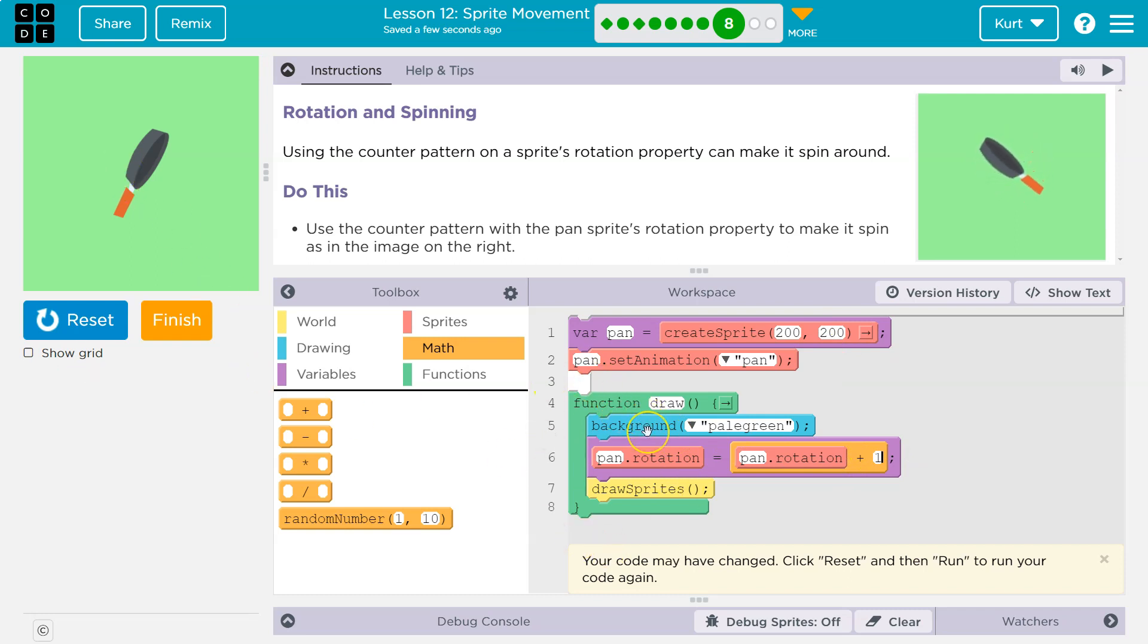We're at the bottom of our loop, go back to the top background pale green that paints over everything, so we don't see the old pan. We hit this and we say, okay, pan.rotation has a new value. Okay. Well, what is it? It's equal to the old pan.rotation. Well, we just said that was one. So one plus one is two. So the new value for pan.rotation is two. Okay. Draw that sprite and it draws it moved over a little bit, rotated a bit.